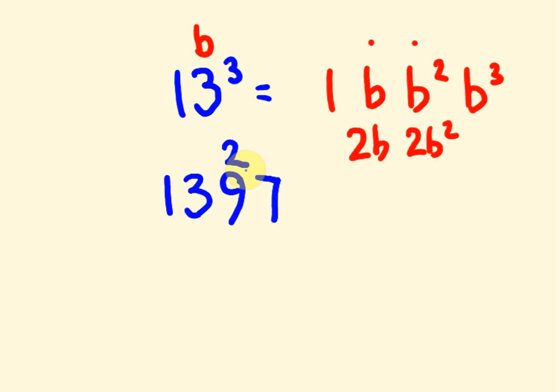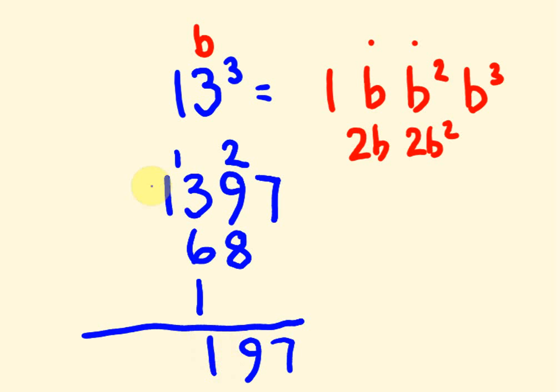And then we double these numbers down here. So 3 doubled is 6 and 9 doubled is 18. So I'll put the 8 there and I'm going to carry that 1 across. And then I just add them up. 7, 2 plus 8 plus 9 is 19, 3 plus 1 plus 6 is 10 plus 1 is 11, and then 1 plus 1 is 2. That's our answer. 2,197.